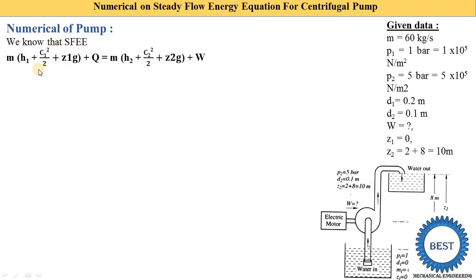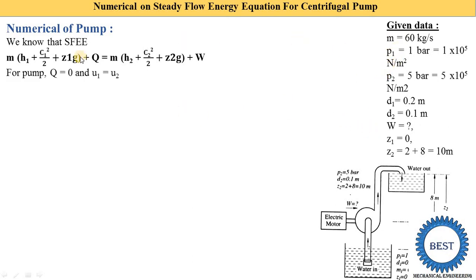The steady flow energy equation is: m(h1 + c1²/2 + z1·g) + Q = m(h2 + c2²/2 + z2·g) + W. Velocity is not directly given, but can be found from mass flow rate and pipe diameters. Enthalpy h = u + pv, and we consider Q = 0 and u1 = u2.